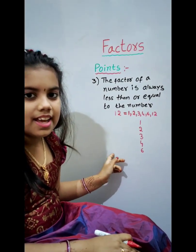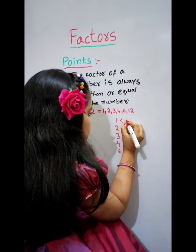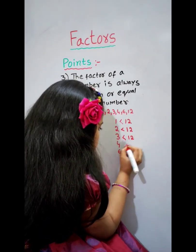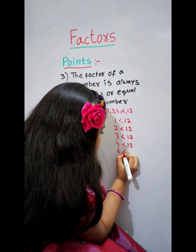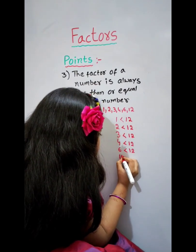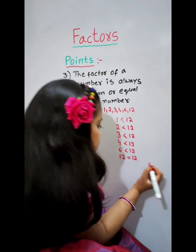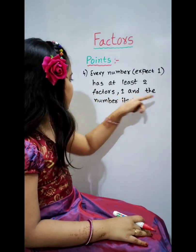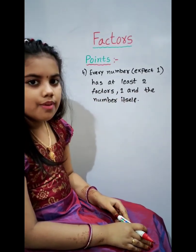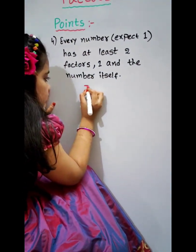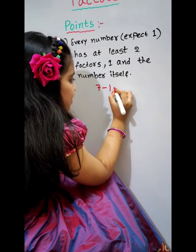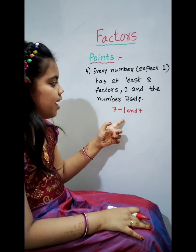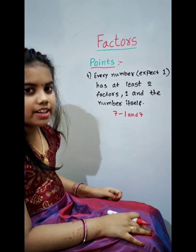The numbers 1, 2, 3, 4, and 6 are less than 12, while 12 equals 12. The fourth one is: every number except 1 has at least two factors — 1 and the number itself. For example, the factors of 7 are 1 and 7, where 1 and the number itself are the factors.